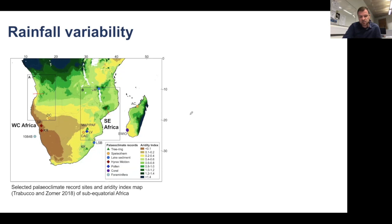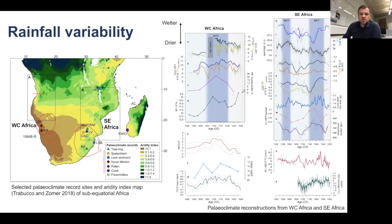Much of the region we're talking about here receives its rainfall in summer. This map also shows the available sites we have for past records of rainfall from natural archives — cave speleothems, tree rings, lake sediments, and so on — down here in the south and in the west of the region. These are what the outcomes of those reconstructions from those natural archives look like.